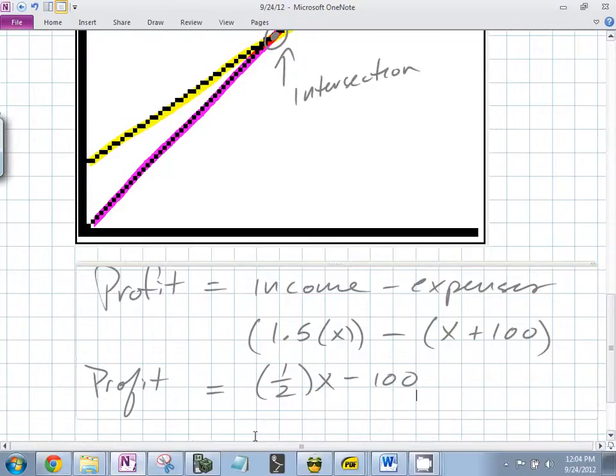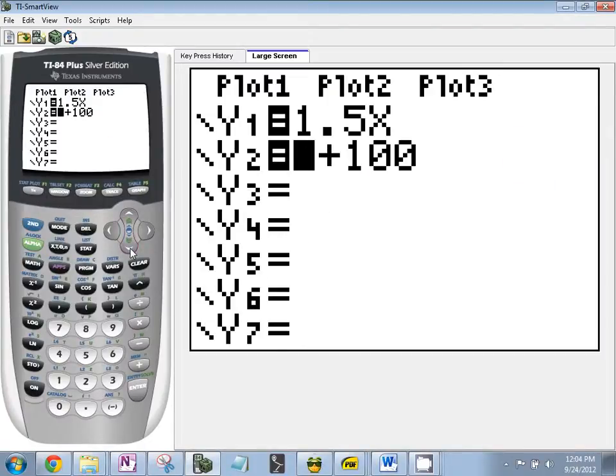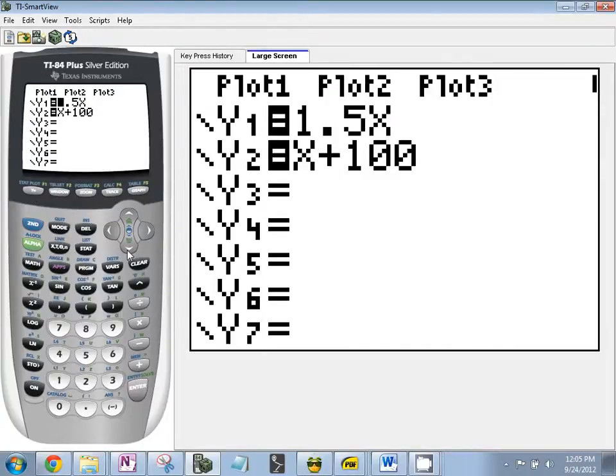Let's graph this. What are we graphing right there? We're actually graphing which function is the profit up there? The first function or the second? Not profit. Which one's the income? The first. So watch this. Let's do this. Quit. Y equals. The first. You agree the first function is the income? Yeah.